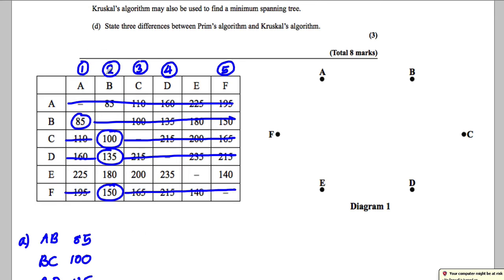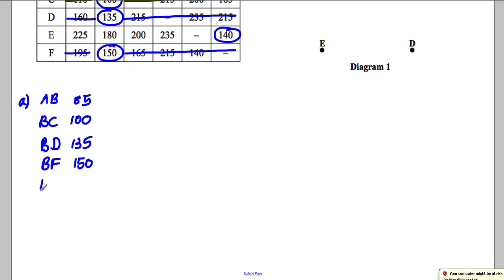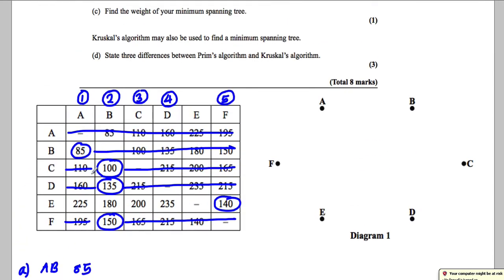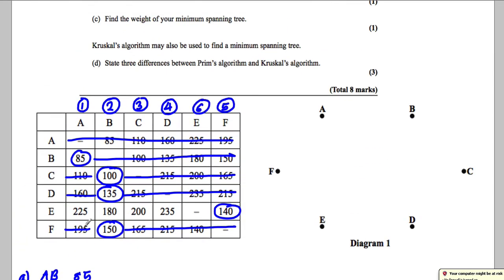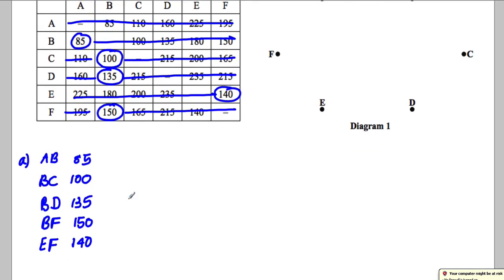That makes F our fifth one to number and we cross out everything in row F. And lastly we look through all the five columns here and the smallest out of all these is this one which is EF. So therefore our last choice must be EF and that's equal to 140. And that means we label that number six and we cross out the entire row there. And we've done Prims by the matrix method.